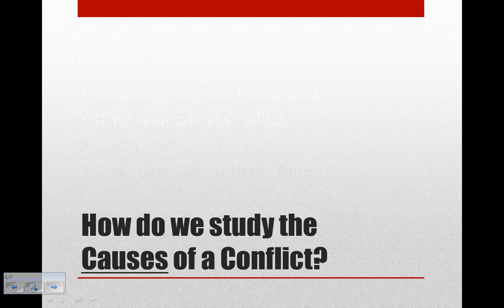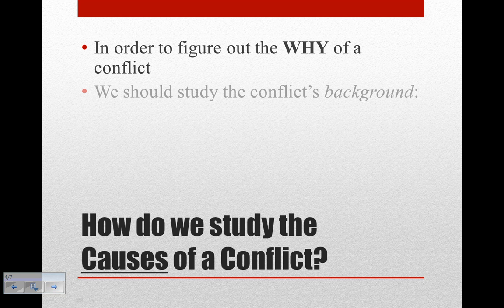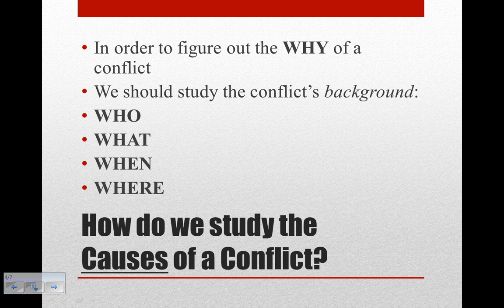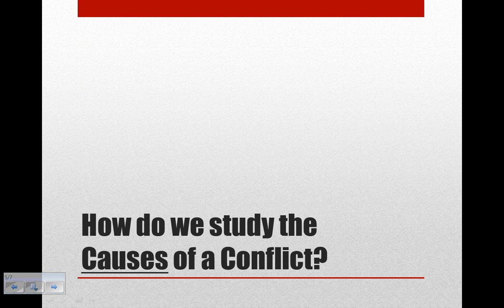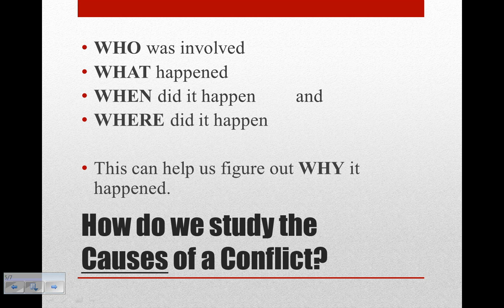So how do we study the causes of a conflict? In order to figure out the why of a conflict, we should study the conflict's background. We should study the who, the what, the when, and the where — who was involved, what happened, when did it happen, and where did it happen. This will help us figure out why it happened and the causes of it.